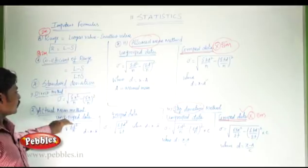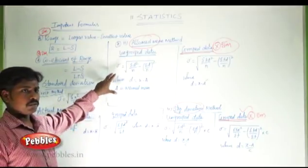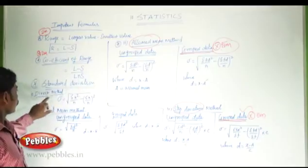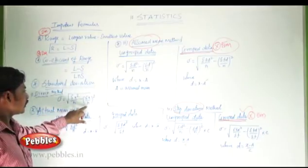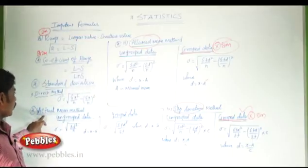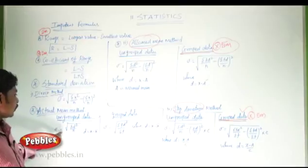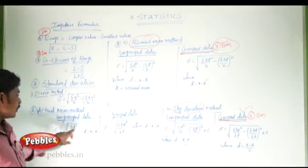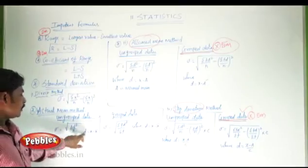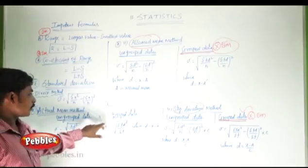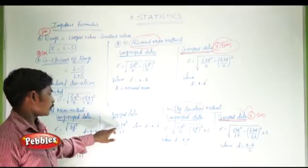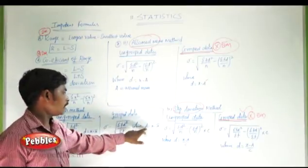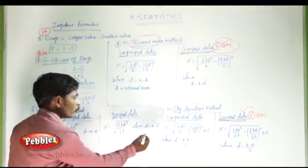The other formulas are used only in two-mark questions. The direct method: standard deviation = √(σx² / n − (σx / n)²). The actual mean method: standard deviation σ = √(σd² / n), where d = x − x̄. For grouped data, standard deviation = √(σfd² / σf), where d = x − x̄.